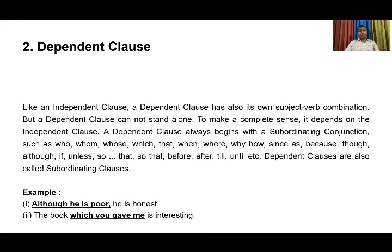The second example: 'The book which you gave me is interesting.' 'Which' is a subordinating conjunction. In the part 'which you gave me', we have a subject and a finite verb 'gave'. So 'which you gave me' cannot make a complete sense, but it has its own subject and its own verb, and at the very beginning it has a subordinating conjunction. So it is a subordinating clause or a dependent clause.